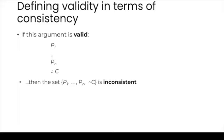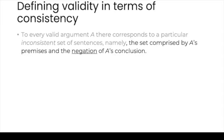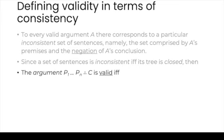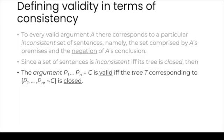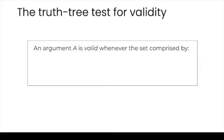Instead of saying it's impossible for a set of sentences to all be true at the same time, we can say that set is inconsistent. So, if this argument is valid, then the set comprised by its premises and the negation of its conclusion is inconsistent. To every valid argument A there corresponds a particular inconsistent set of sentences — namely, the set comprised by A's premises and the negation of A's conclusion. Since a set of sentences is inconsistent if and only if its tree is closed, the argument is valid if and only if the tree corresponding to the premises and the negation of the conclusion is closed.